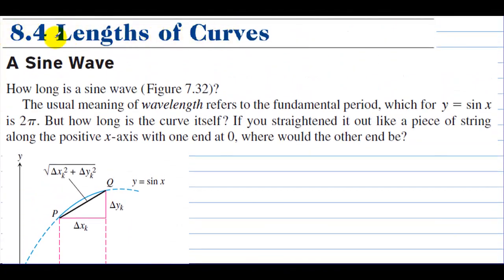8-4, lengths of curves. Let's take a sine wave — how long is a sine wave? The usual meaning of wavelength refers to the fundamental period, which for y equals sine of x is 2 pi. But how long is the curve itself? If you straighten it out like a piece of string along the positive x-axis with one end at zero, where would the other end be?